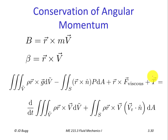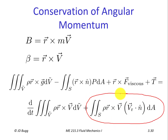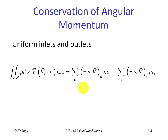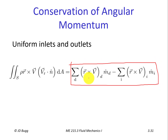Just like the other conservation equations, there is also a uniform flow version of this equation, and the only term affected is the last one. If we can assume uniform flow at discrete discharges and inlets, that last term in the general form can be replaced by summations over discharges and inlets. The only difference from linear momentum is that we take r cross v at each discharge and inlet rather than just v — angular momentum rather than linear momentum.